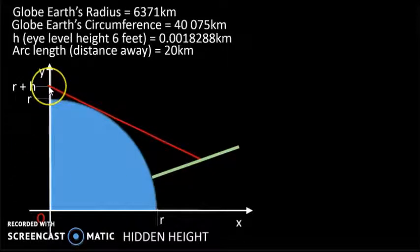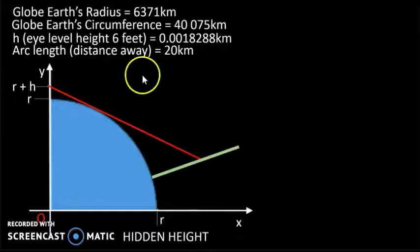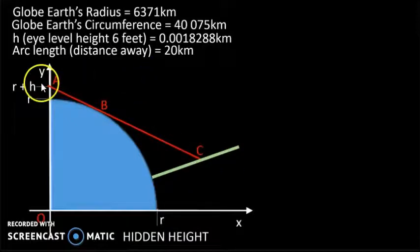If we draw a tangent from the observer touching the horizon to the building, we would see that this section is hidden and this section is visible. So we can label these points A, B and C.